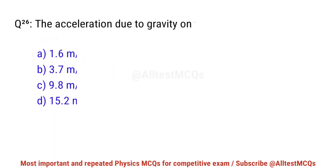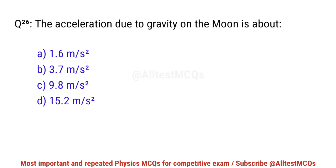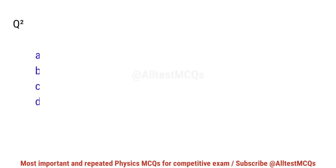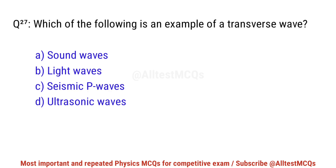Question No. 26. The acceleration due to gravity on the moon is about? Correct option is A. 1.6 meters per second squared.